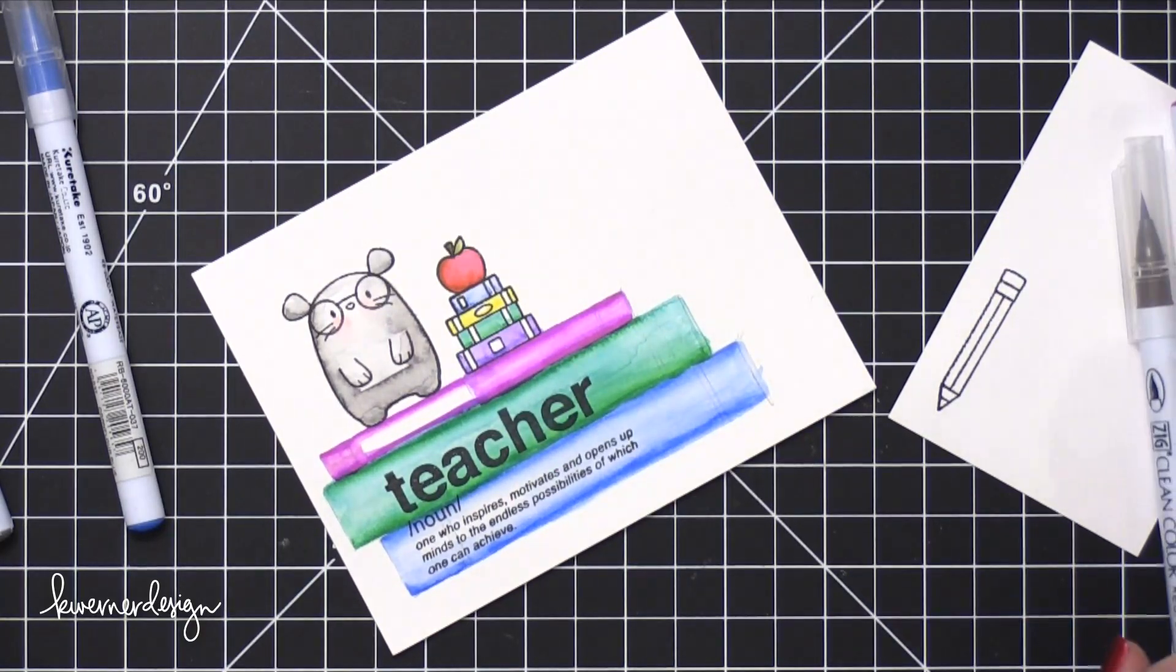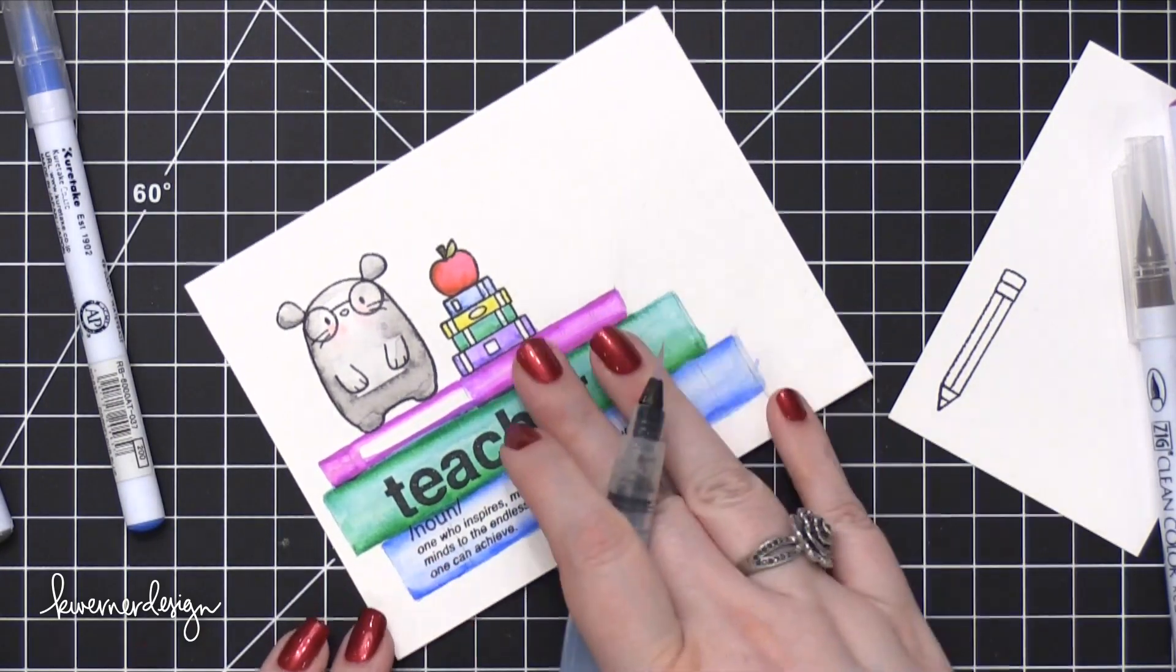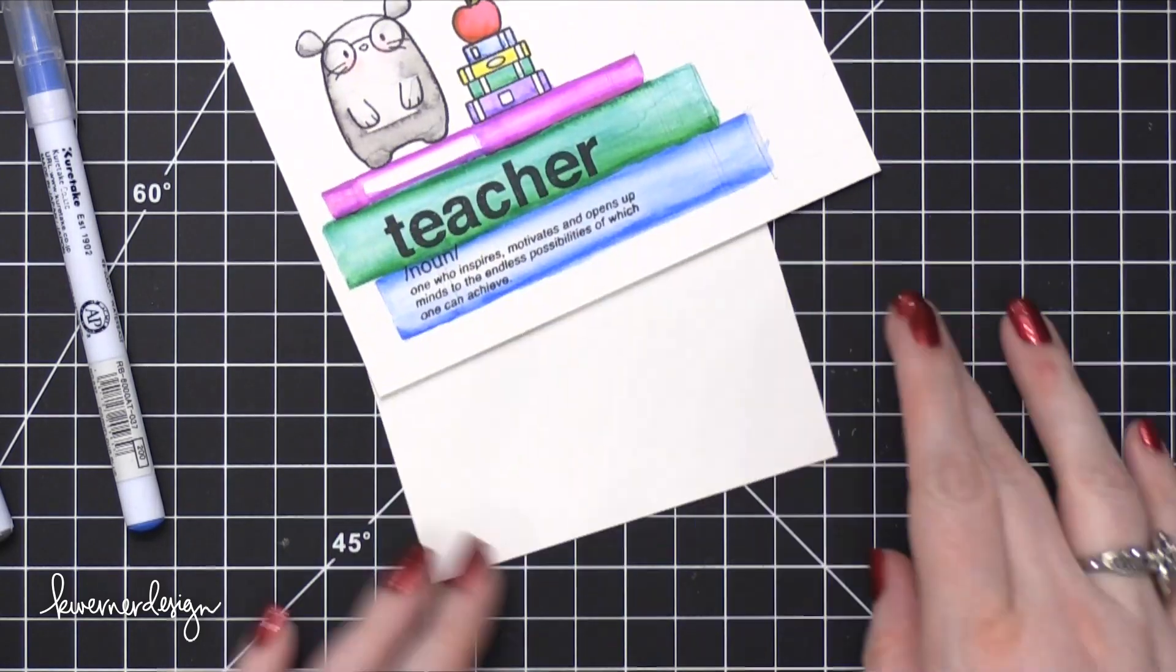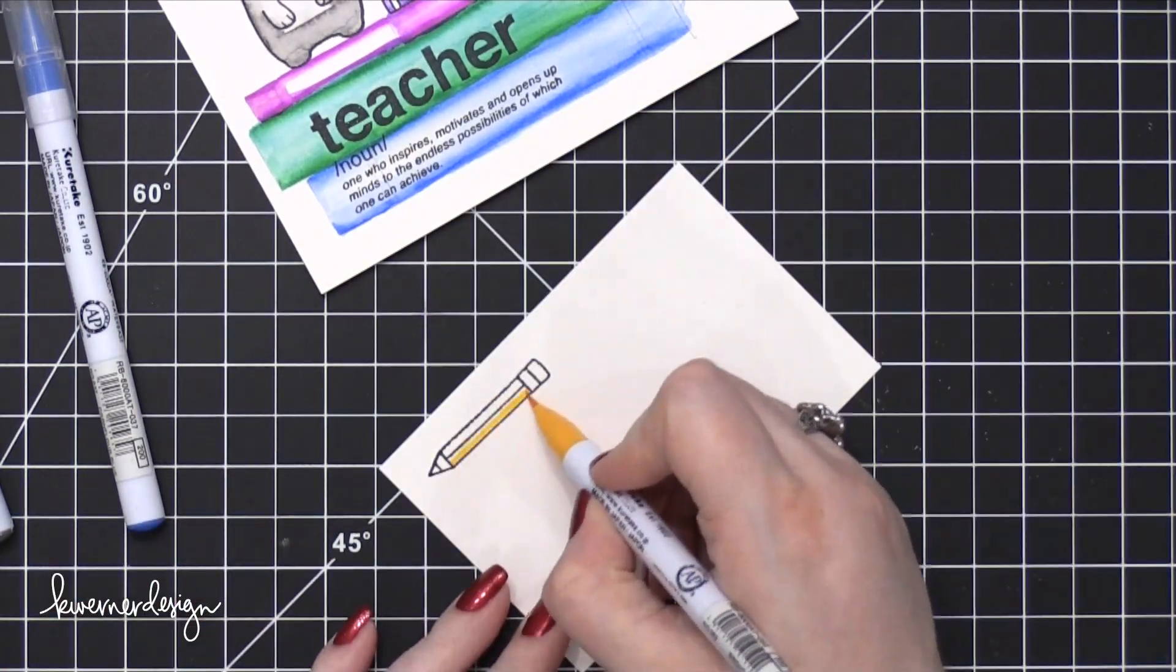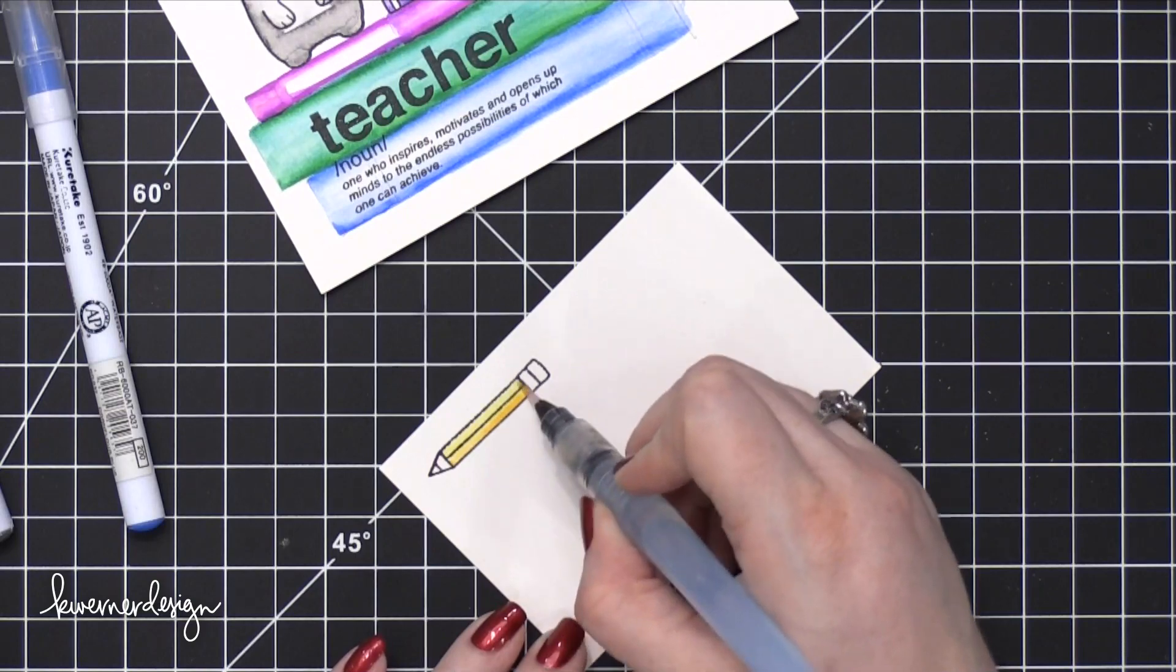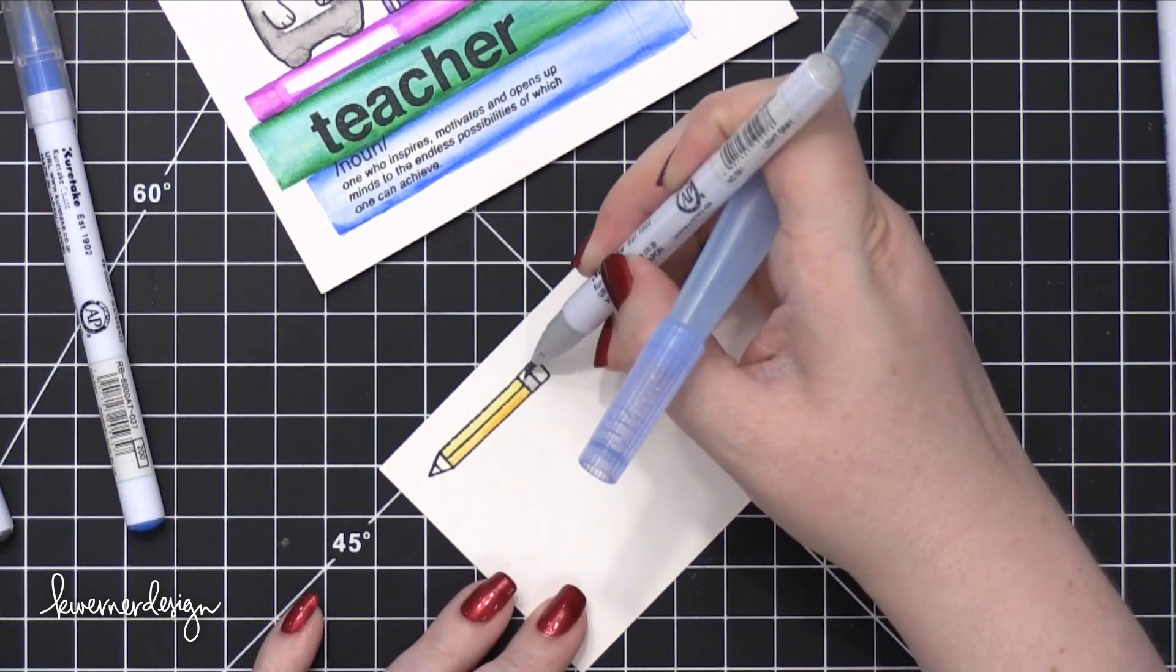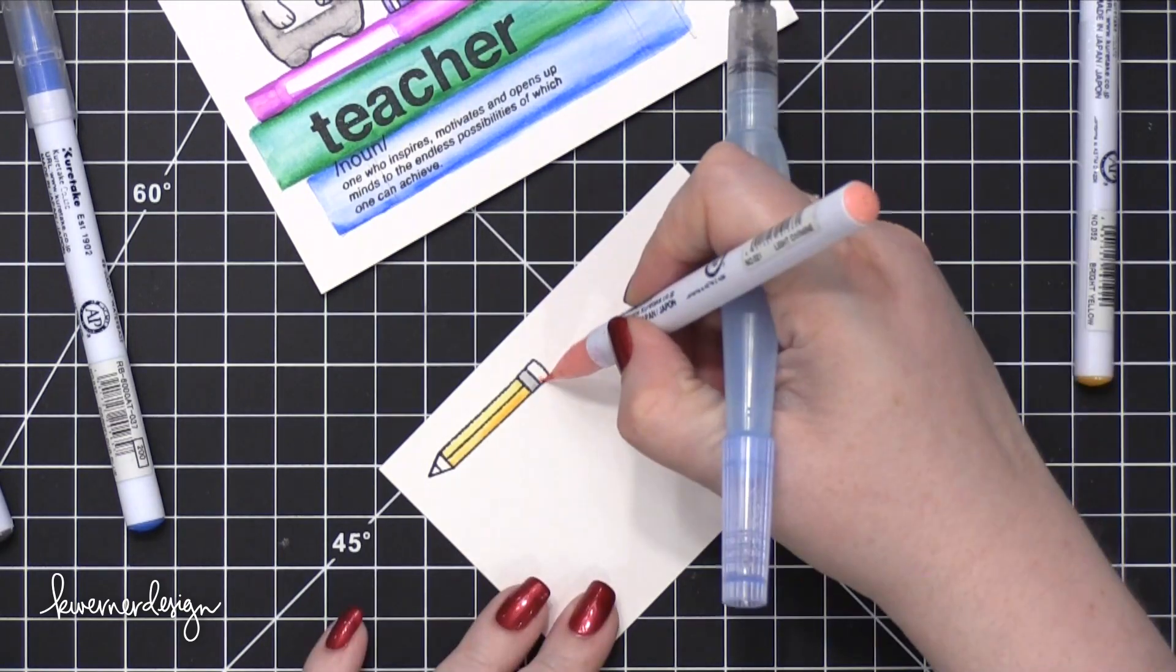I'm just going to use a marker to color in the leaf and stem on the apple as well as coloring in that pencil that I stamped on that separate piece of Bristol paper. Just going to use some yellow on the barrel of that pencil. And then I'll go ahead and just do some more coloring on the eraser as well as the tip of that pencil.